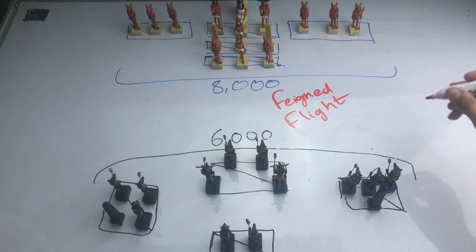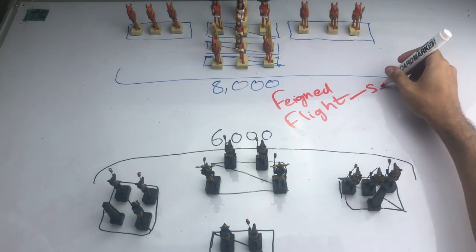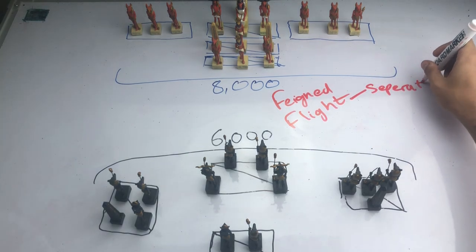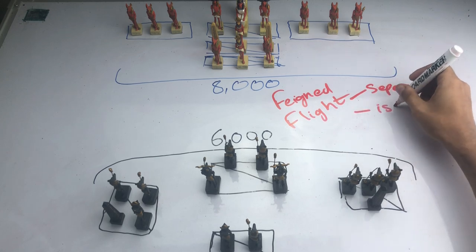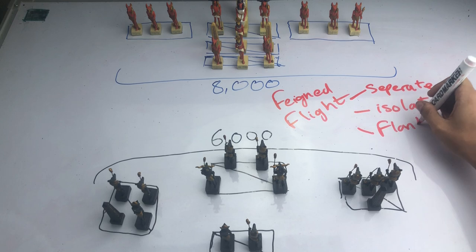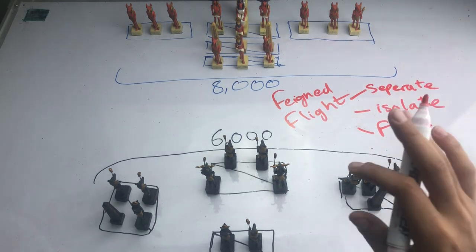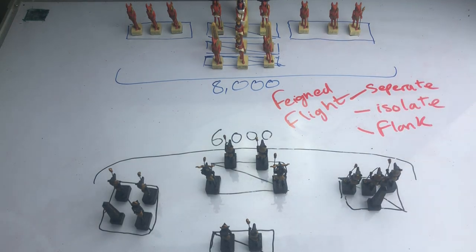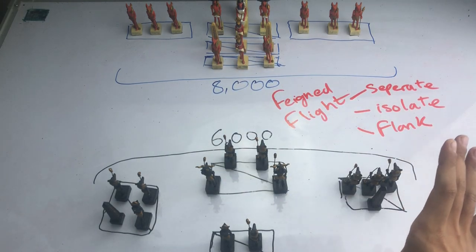Now, they're going to execute this feigned flight in three separate steps. The first is separate. The second is isolate. And the final one is flank or overwhelm. But before we talk about these three steps and how they execute this feigned flight at this battle, let's first give some context to what's happening here. Why are these two sides fighting?